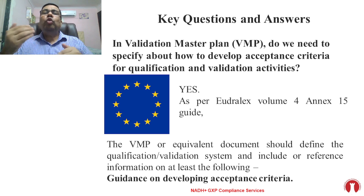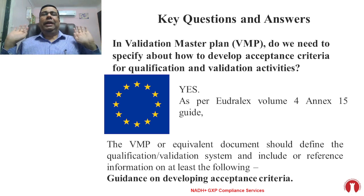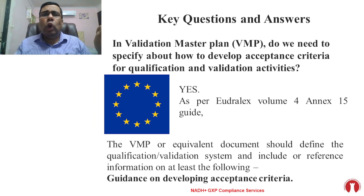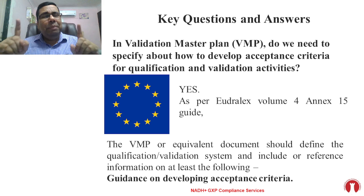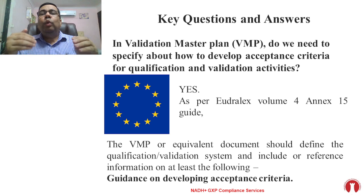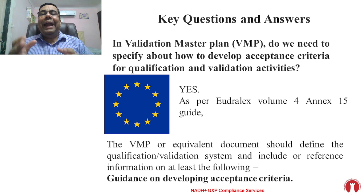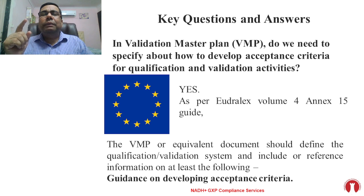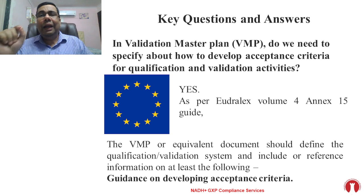The first question: in the Validation Master Plan, do we need to specify how to develop acceptance criteria for qualification and validation activities? The answer is a sure-shot yes. Many VMPs I have audited lack this requirement. The reference is EU GMP Volume 4 Annex 15, and also the PIC/S guide — both carry the same requirement. The VMP or equivalent document should define the qualification and validation system and include or reference information on at least the following points.